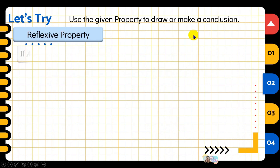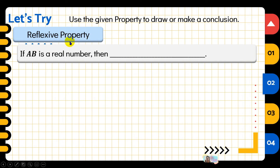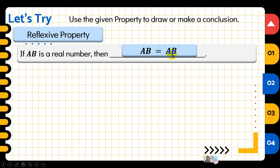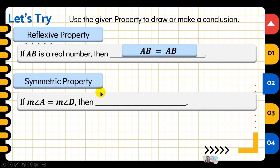Now let's use a given property to draw a conclusion. First, reflexive property: if AB is a real number, then measure of line segment AB equals measure of line segment AB — it is always equal to itself. Next, symmetric property: if measure of angle A equals measure of angle D, then measure of angle D equals measure of angle A. We interchange the positions and they remain equal.